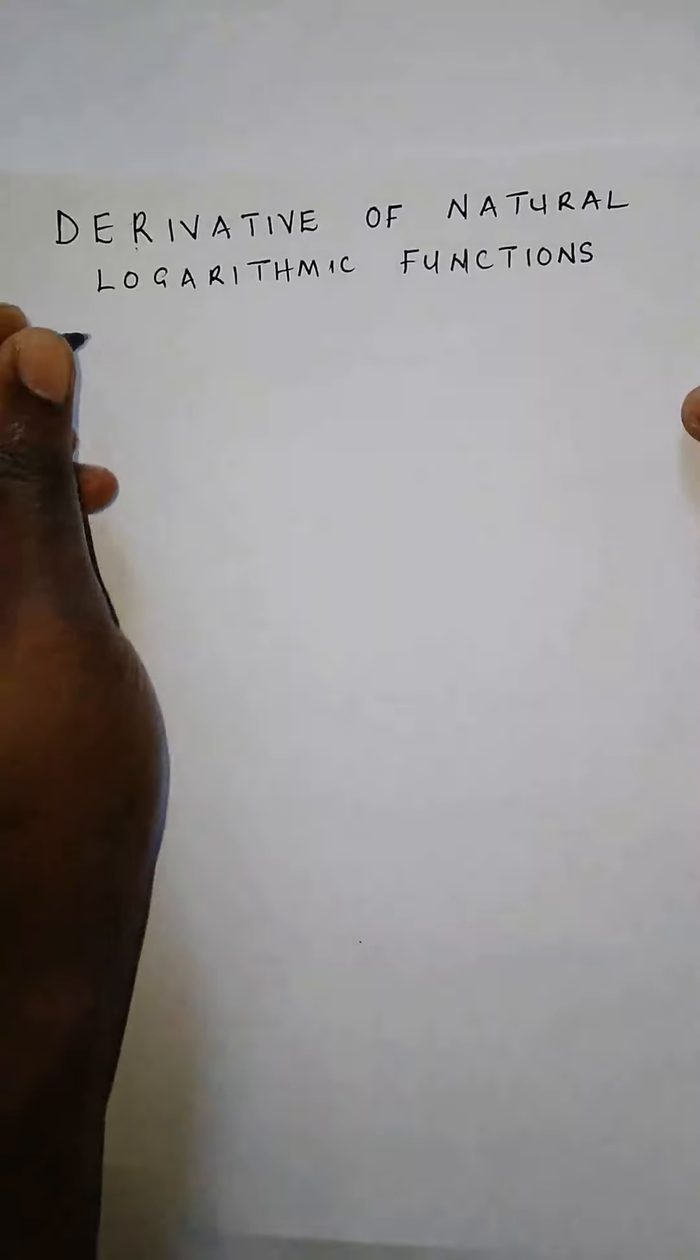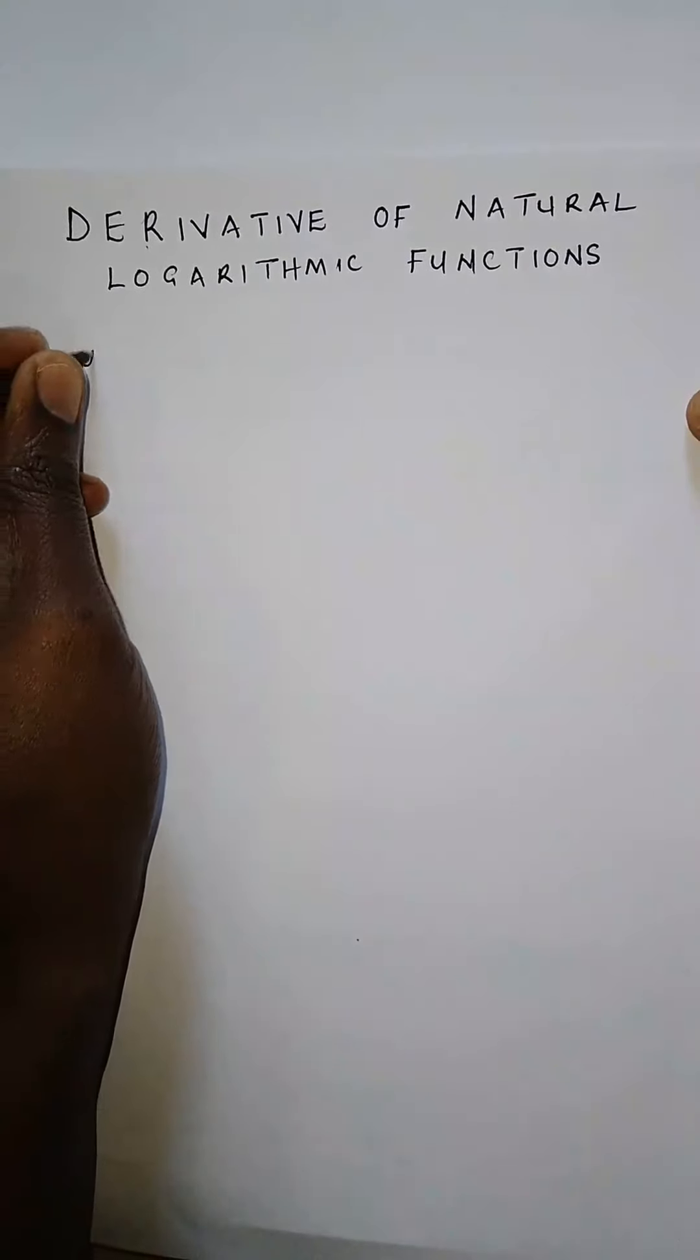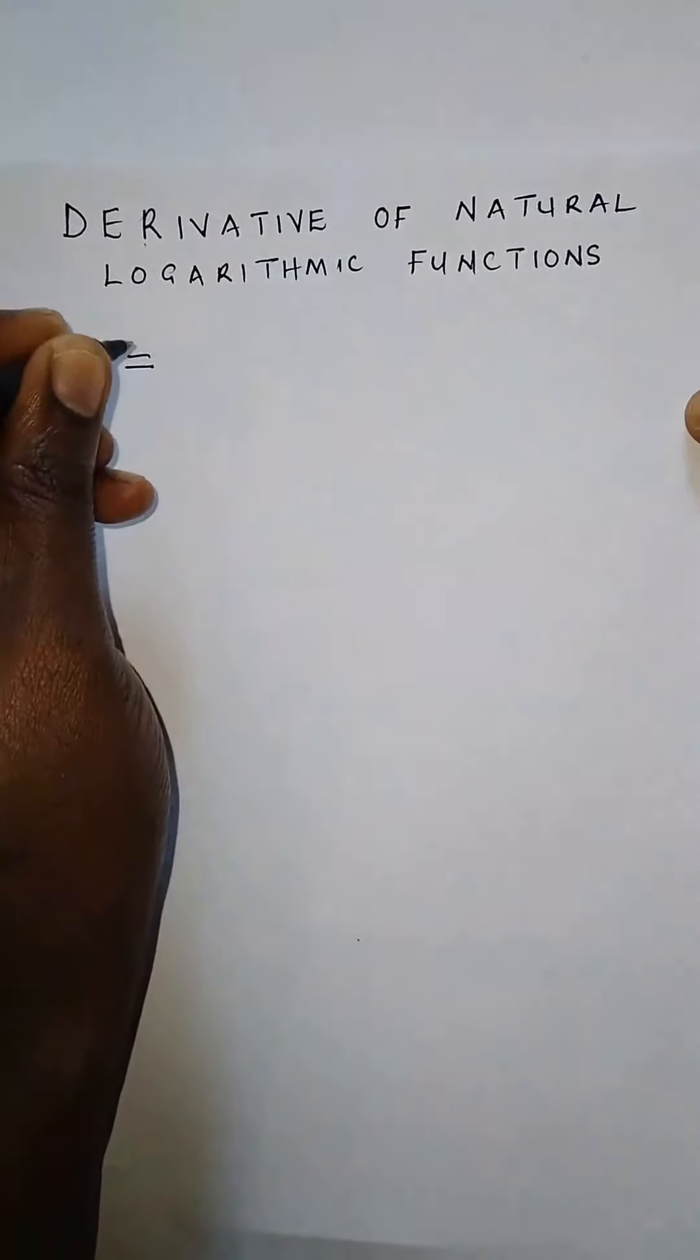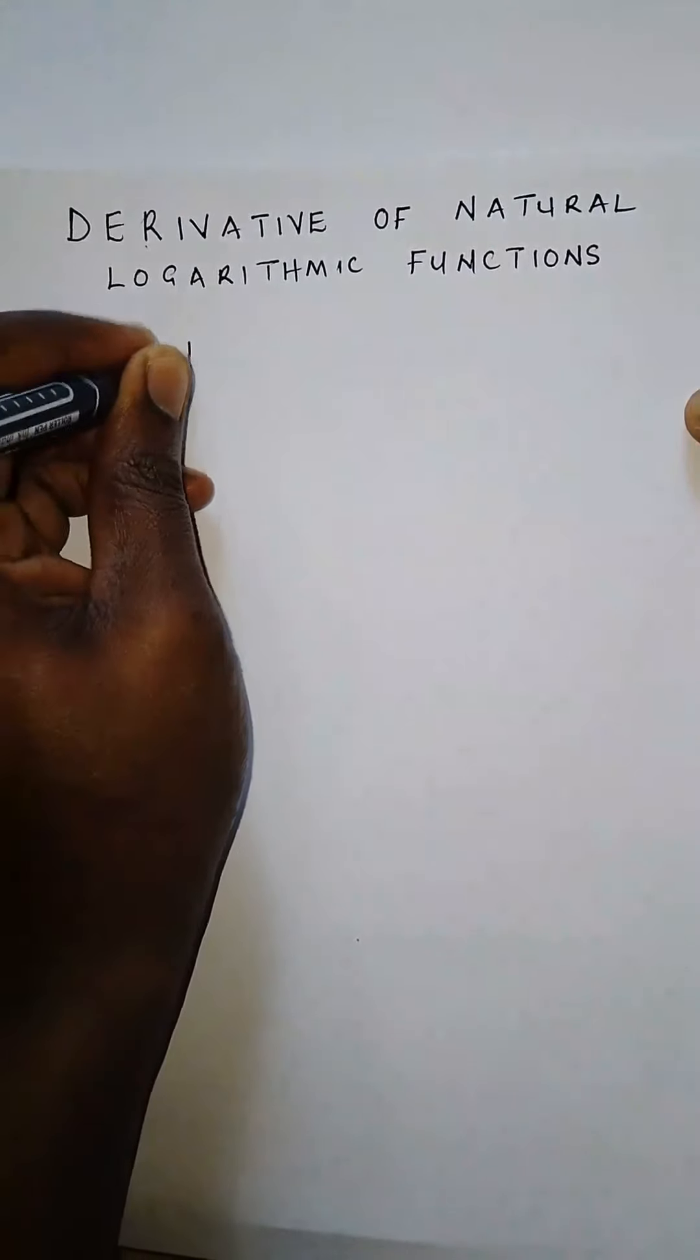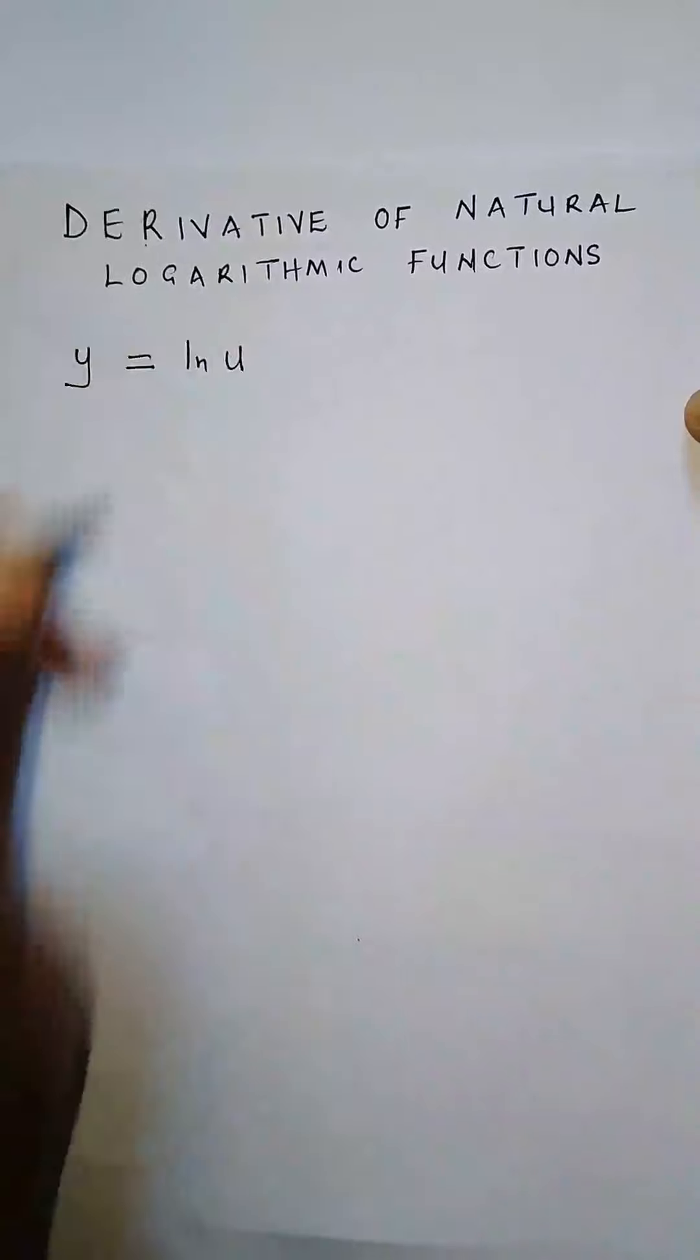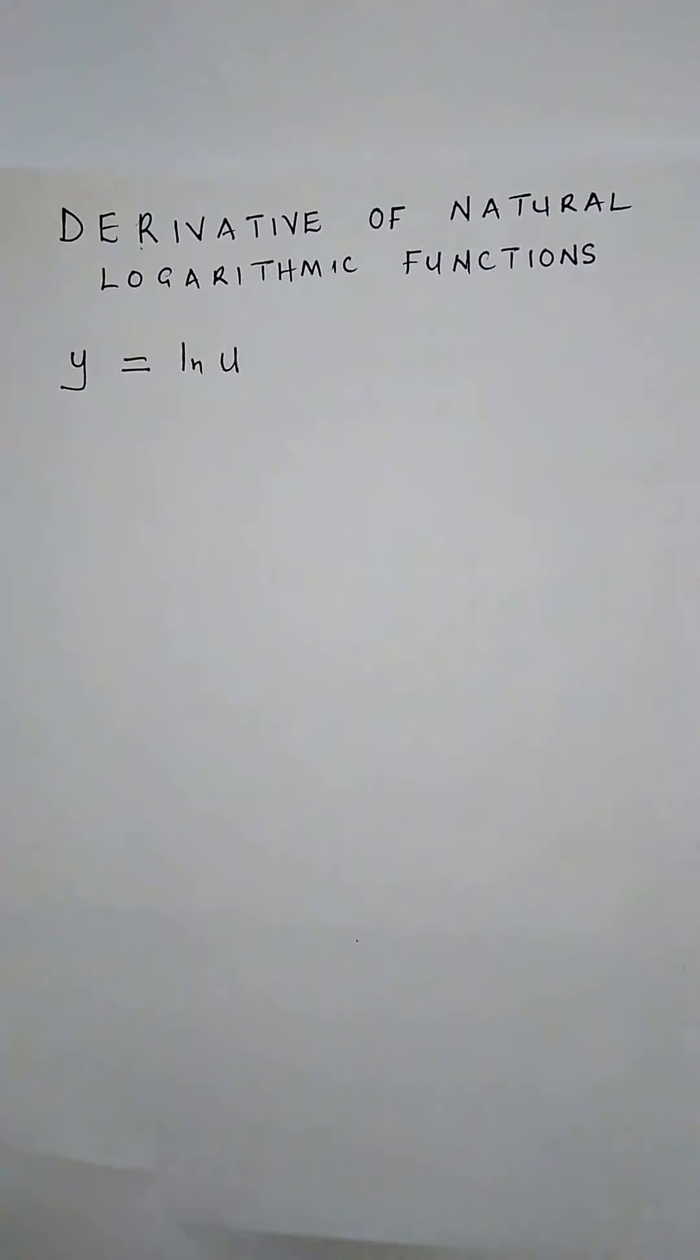How do we find the derivative of a natural logarithmic function? Given a function, let's say we have a function y equals the natural log of u, which is just ln u. So what is the derivative of the natural log of u?